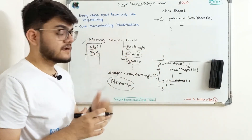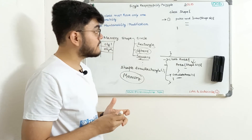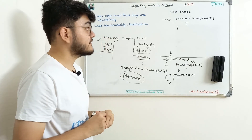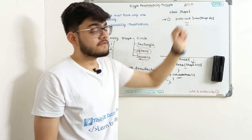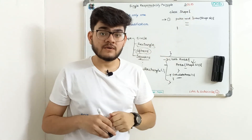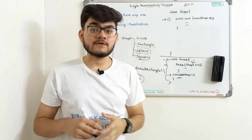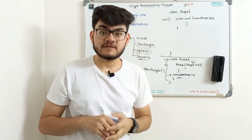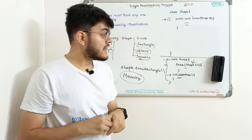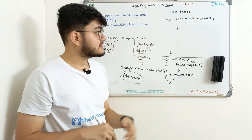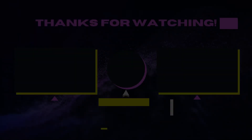So we can resolve this issue by creating multiple classes that perform different responsibilities separately, giving us modification and maintenance advantages. That's all for the Single Responsibility Principle. In the next tutorial, we're going to study O of SOLID — the Open/Closed Principle — another very important principle. Thanks for watching.